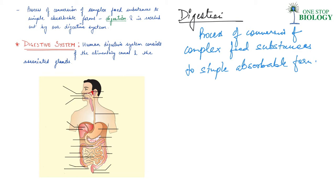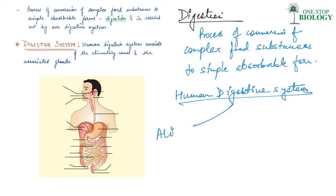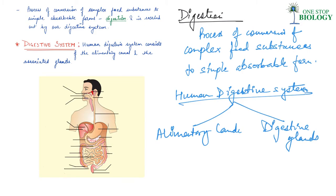If we talk about the human digestive system, this system consists of two things: the alimentary canal, and the digestive glands associated with it. So the entire human digestive system consists of the alimentary canal and associated digestive glands. What we are going to start with is the alimentary canal.